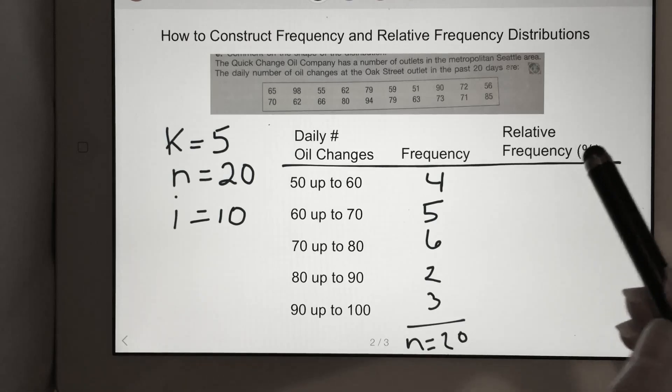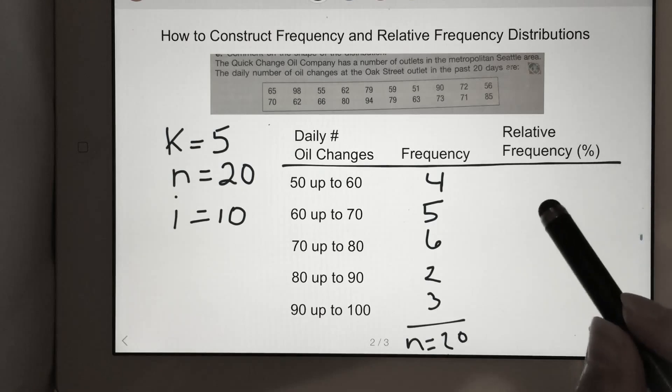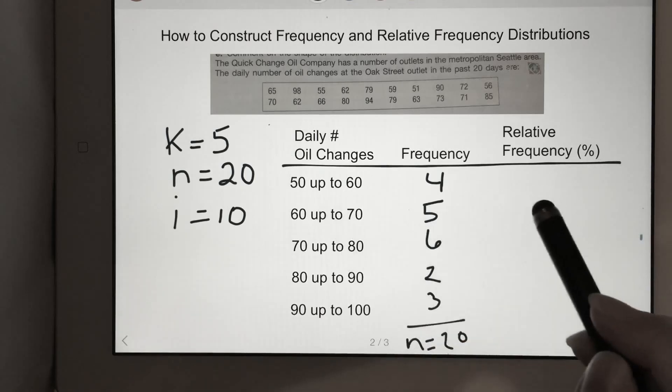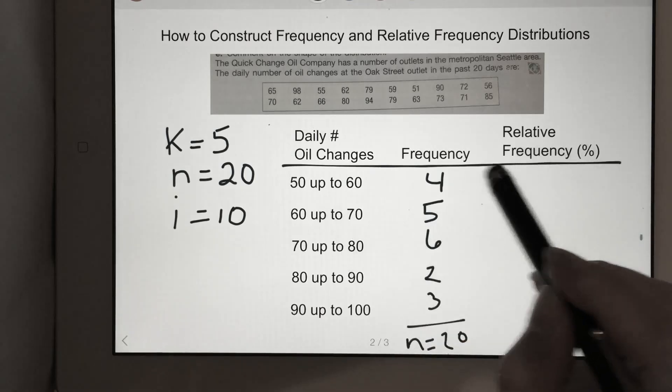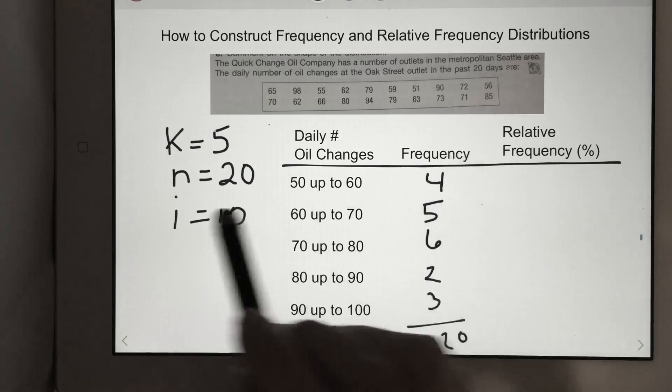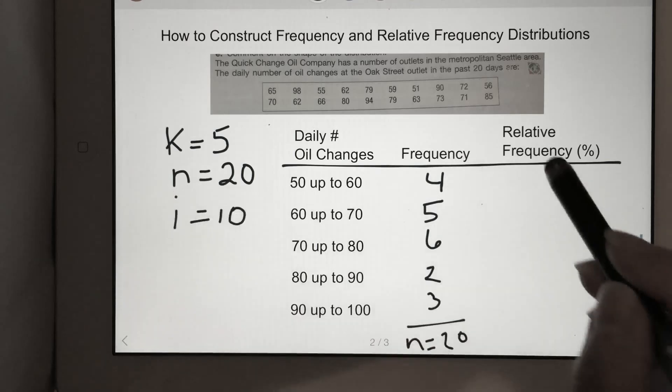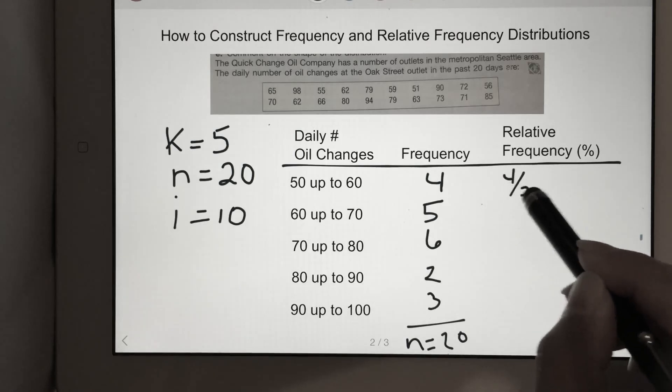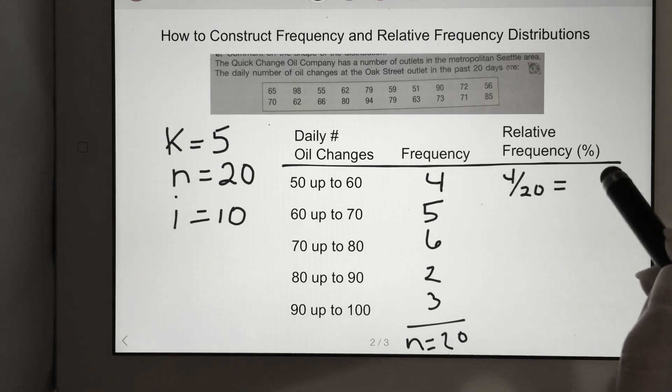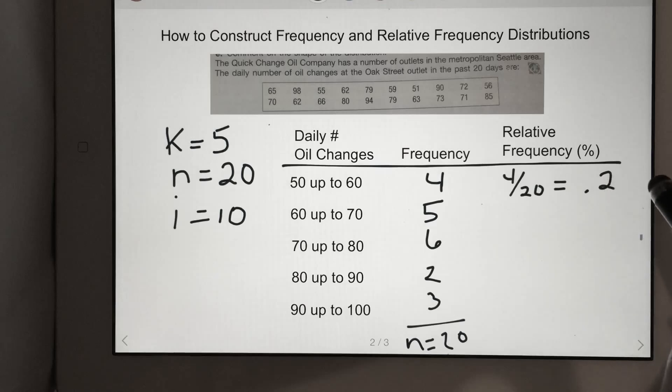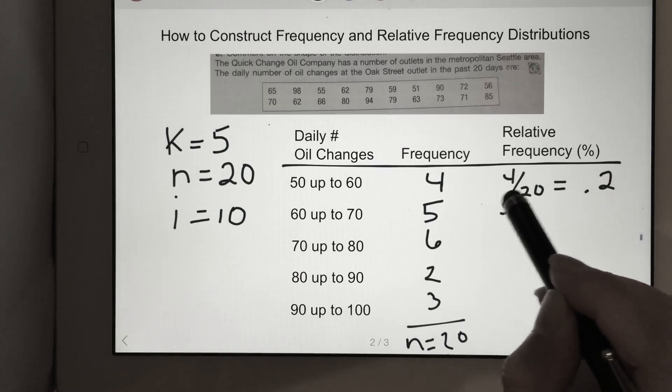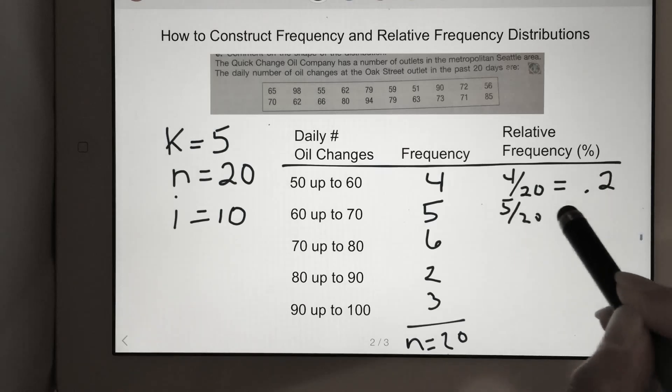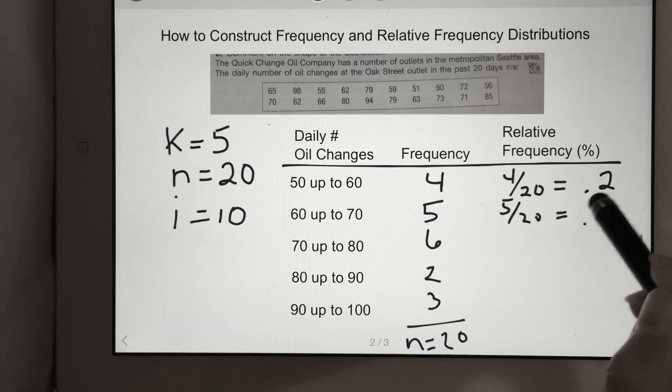Next we're going to find our relative frequency, which is also just the percent. This is quite easy to do. To find the percent, we take the frequency and we divide it by the total number of observations. So 4 divided by 20 is 0.2. And we do that for the rest. 5 divided by 20 is 0.25.